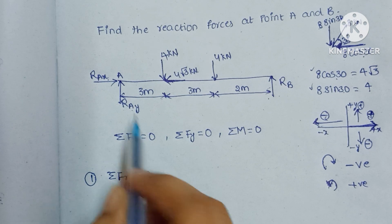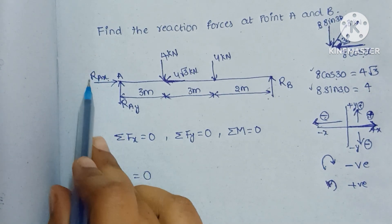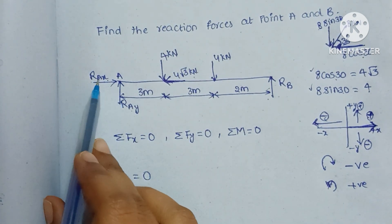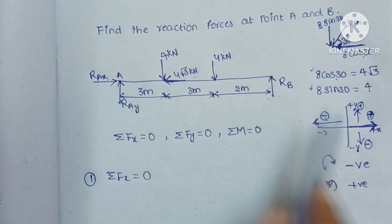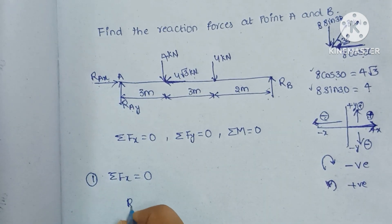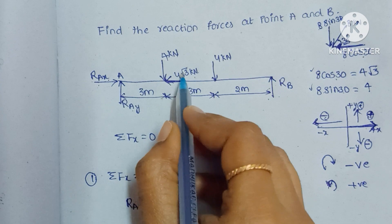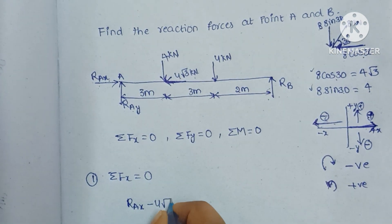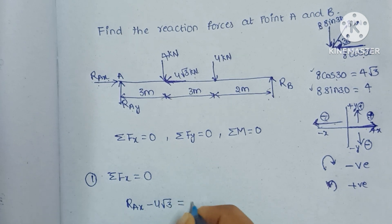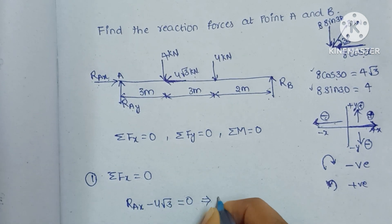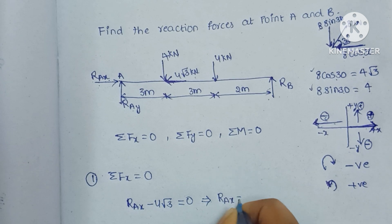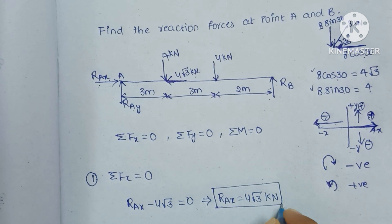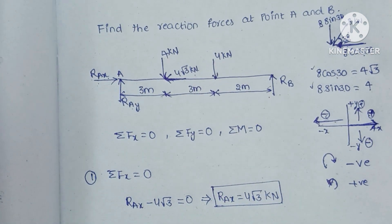Applying ΣFx = 0: the only forces in the x direction are RAx (positive, acting rightward) and the 4√3 kN component (acting leftward, so negative). Therefore: RAx − 4√3 = 0, which gives RAx = 4√3 kilonewtons.